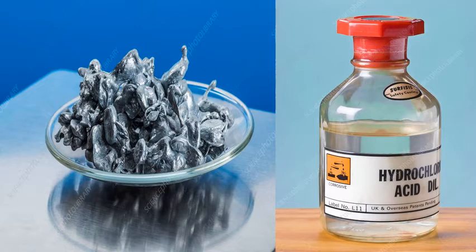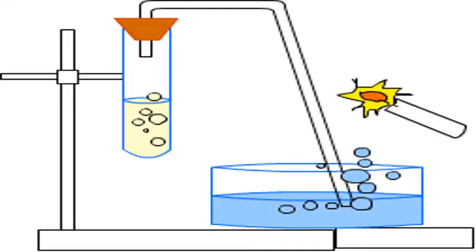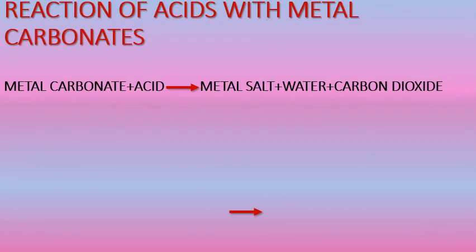Jab zinc metal dilute hydrochloric acid ke saath react kiya jata hai, then how can we check that the gas released is hydrogen gas only? For that, we will take a burning candle or matchstick near the gas-filled container. It will produce a pop sound, yaani ki chote chote blast hoongay. Ye blast ya pop sound hydrogen gas ki presence show karte hai.